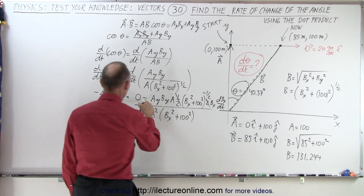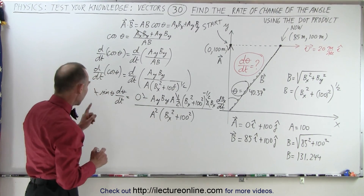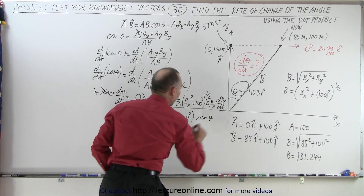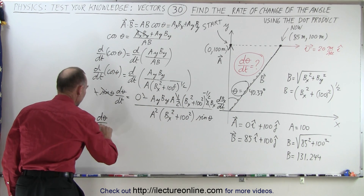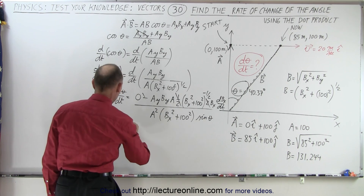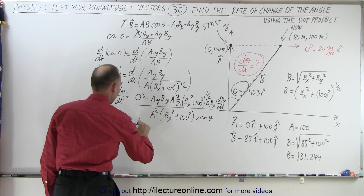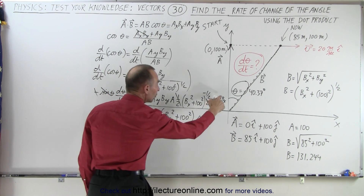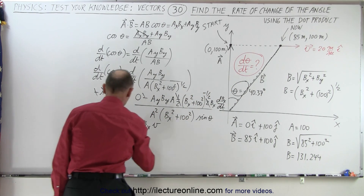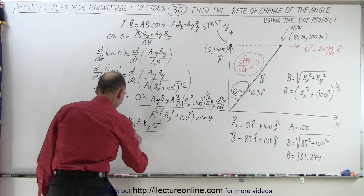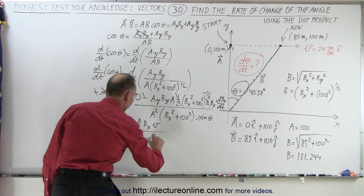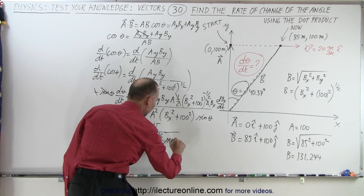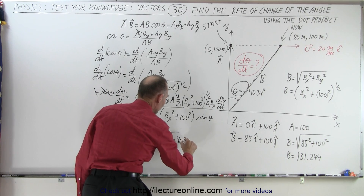Notice that this can go to the denominator — that becomes this to the three halves power. The one half will cancel out the two, and this negative will cancel out this negative. Now I just realized the sine of theta needs to go over here, so I'm going to move the sine of theta down here in the denominator. And now I'm ready to simplify this. D theta DT — that's what I'm looking for — is equal to AY times BY times A times B sub X times the velocity, divided by A squared times the quantity B sub X squared plus 100 squared to the three halves power times the sine of the angle, and the angle was 40.37 degrees.